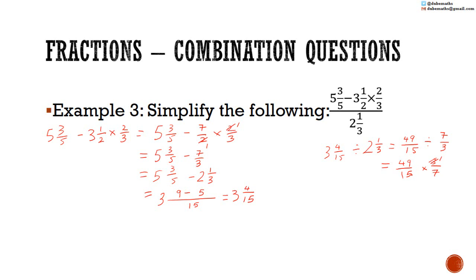Cancelling: 3 into 3 is 1, 3 into 15 is 5. 7 into 7 is 1, 7 into 49 is 7. So 7 multiplied by 1 is 7, and 5 multiplied by 1 is 5. Expressed as a mixed number: 7 divided by 5 is 1, remainder 2. So the answer is 1 and 2 fifths.